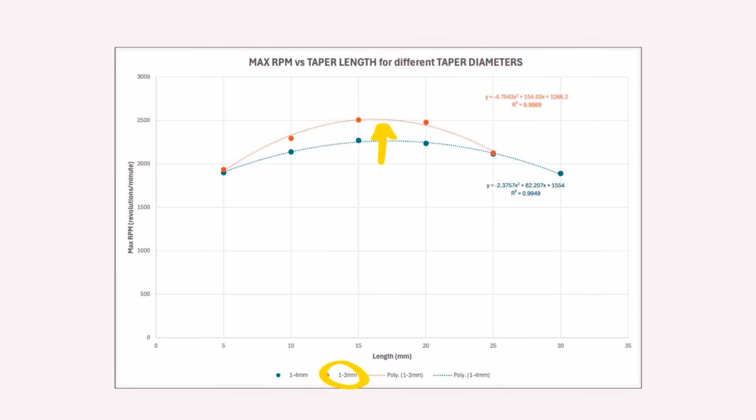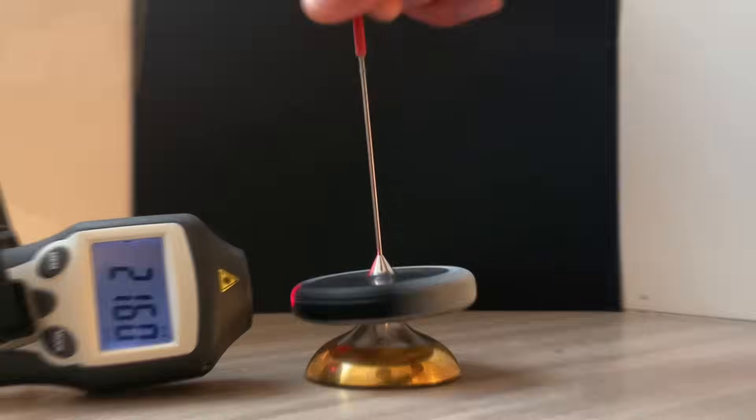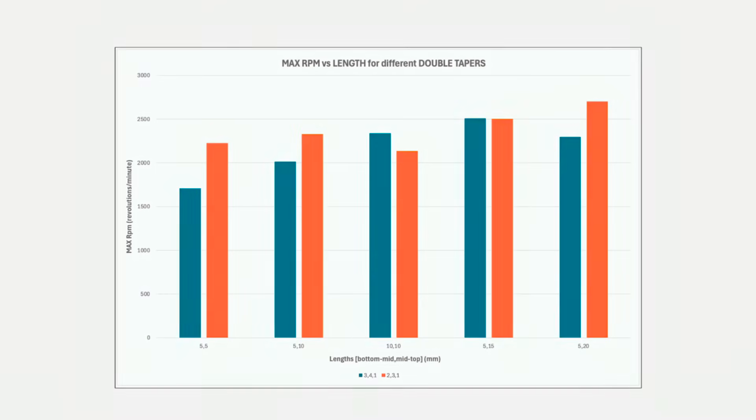The important thing is that the 3 to 1 tapers all perform better. This really goes to show how thinness seems to help with starting speed. I also tested some double tapers, 3 to 4 to 1 millimeters, and 2 to 3 to 1 millimeters. And I found this 20 millimeter long one to be the best.